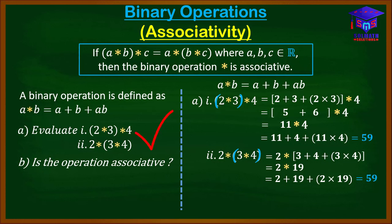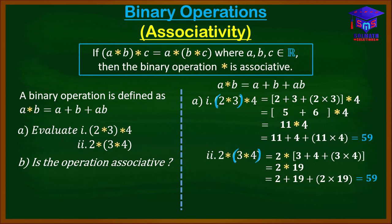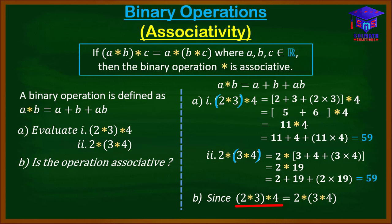Now for part B — is the operation associative? From the definition, an operation is associative if (A★B)★C = A★(B★C). We found that (2★3)★4 = 59 and 2★(3★4) = 59. Since (2★3)★4 = 2★(3★4), we conclude that the operation star is associative.